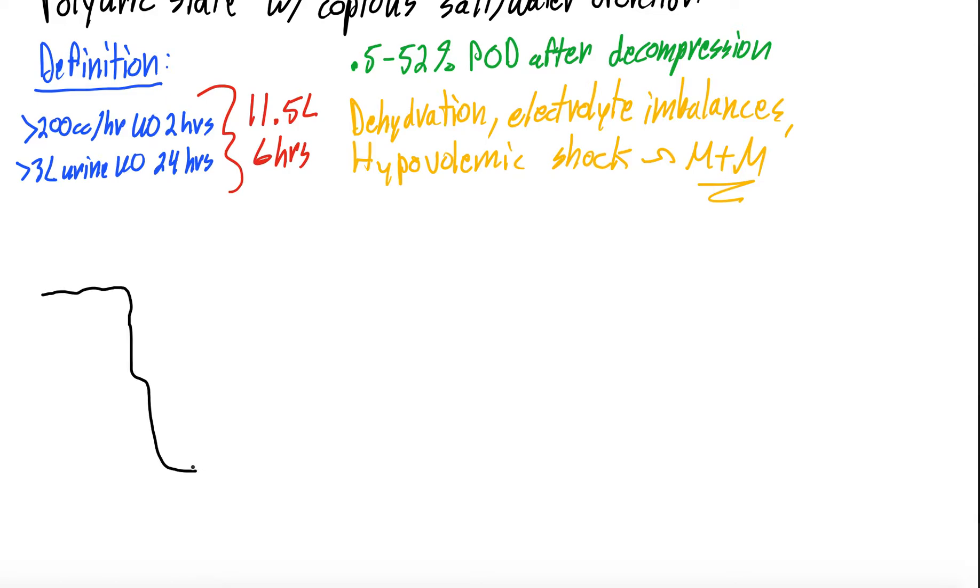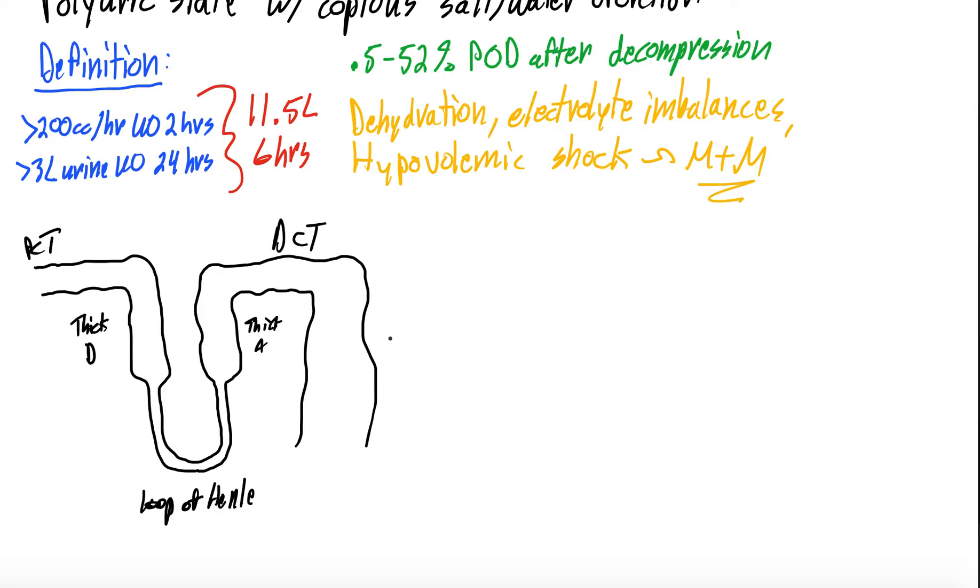We have the proximal convoluted tubule into the thick descending, into the loop of Henle, into the thick ascending, into the distal convoluted and collecting duct. So we had our proximal convoluted tubule, this is our thick descending, this is our loop of Henle. Here's our thick ascending, our distal convoluted tubule, and our collecting duct.